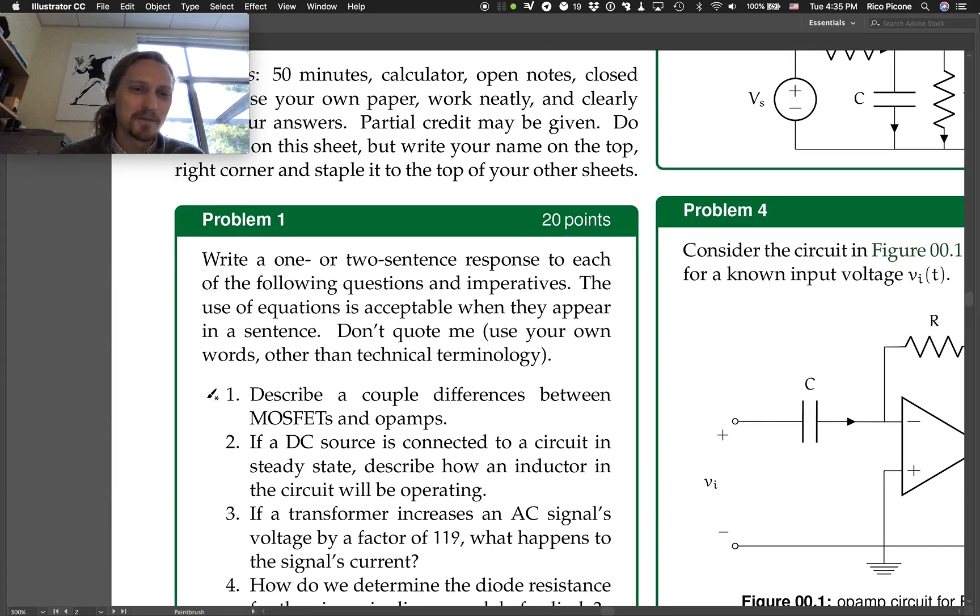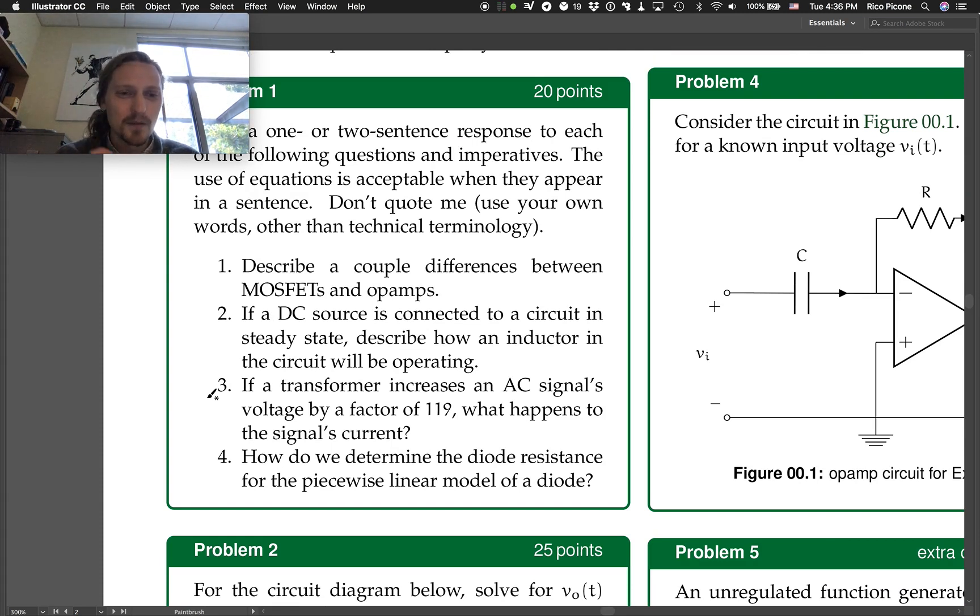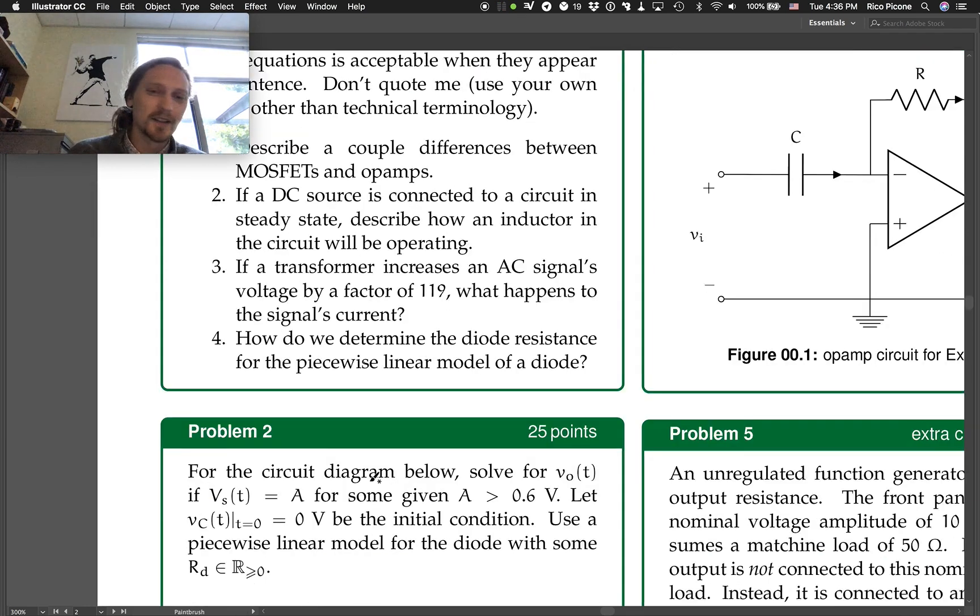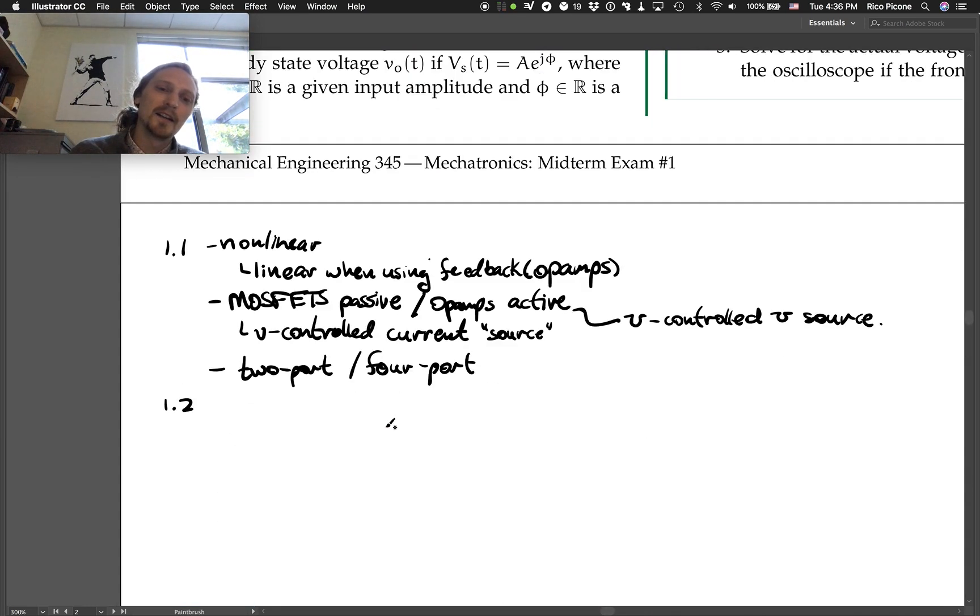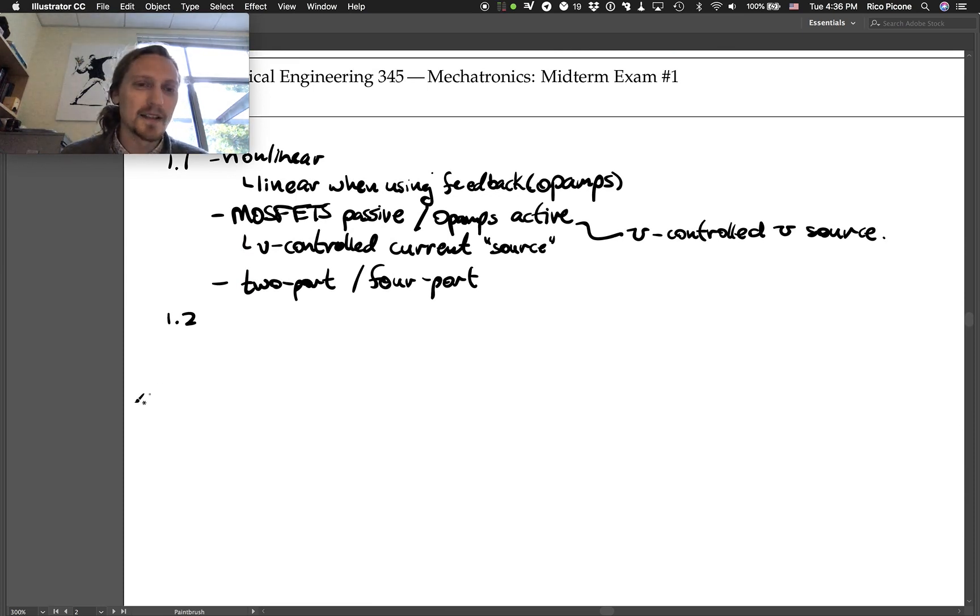Okay, so if a DC source, number two, if a DC source is connected to a circuit in steady state, describe how an inductor in the circuit will be operating. So you have to make the assumption that there's no AC source connected to the circuit, but assuming that there is none. When there's a DC source connected to a circuit in steady state, that means that all the voltages and currents in the circuit are going to be unchanging, they're going to be steady with time.